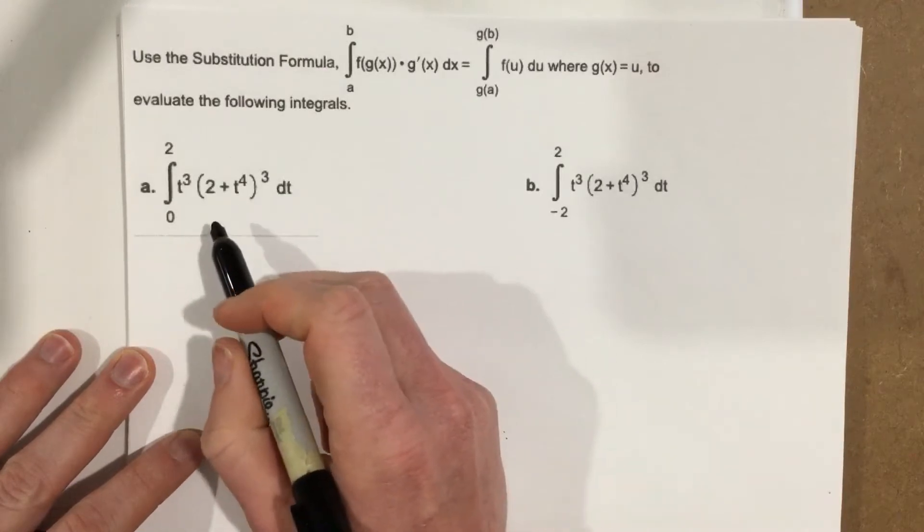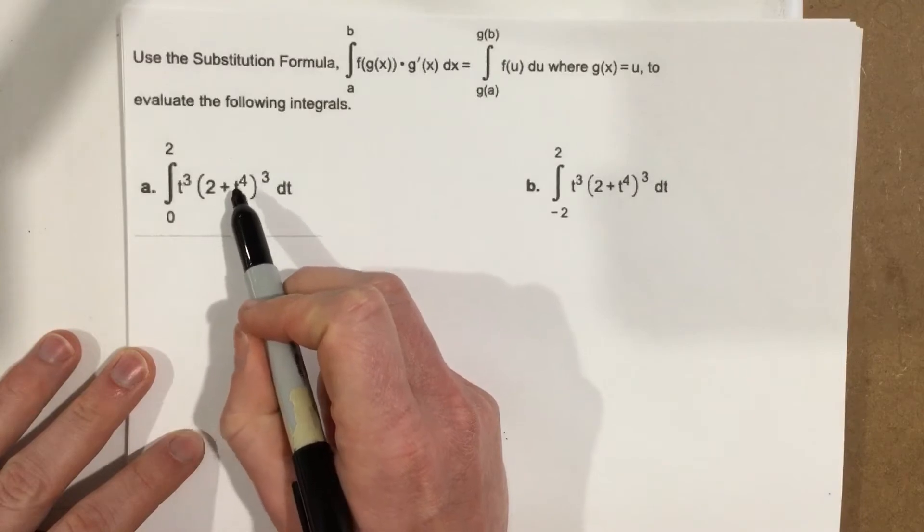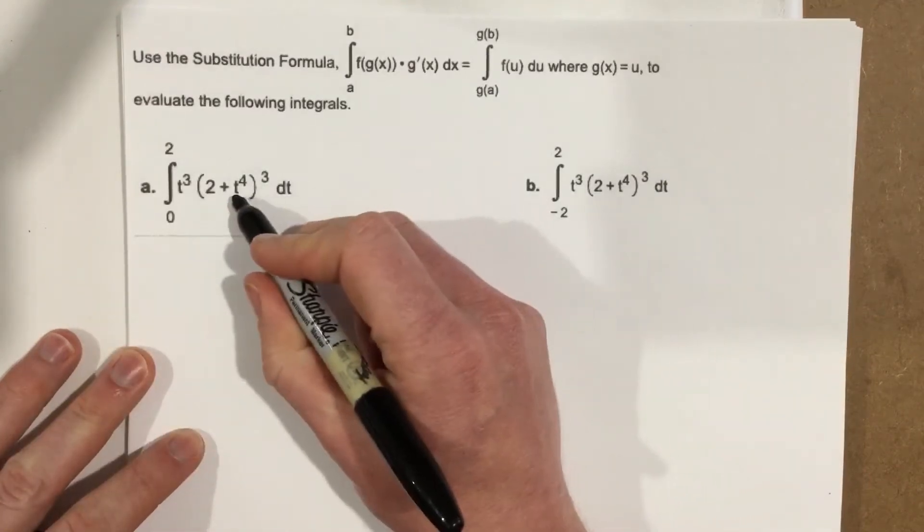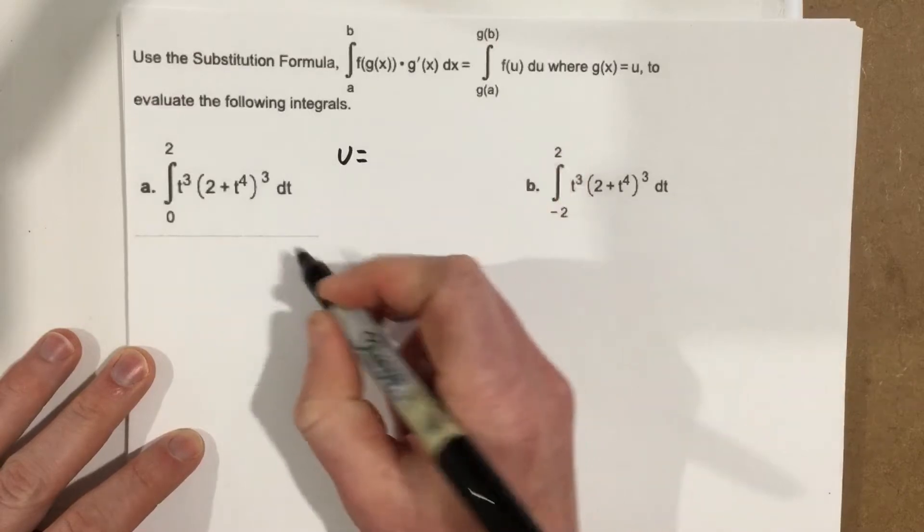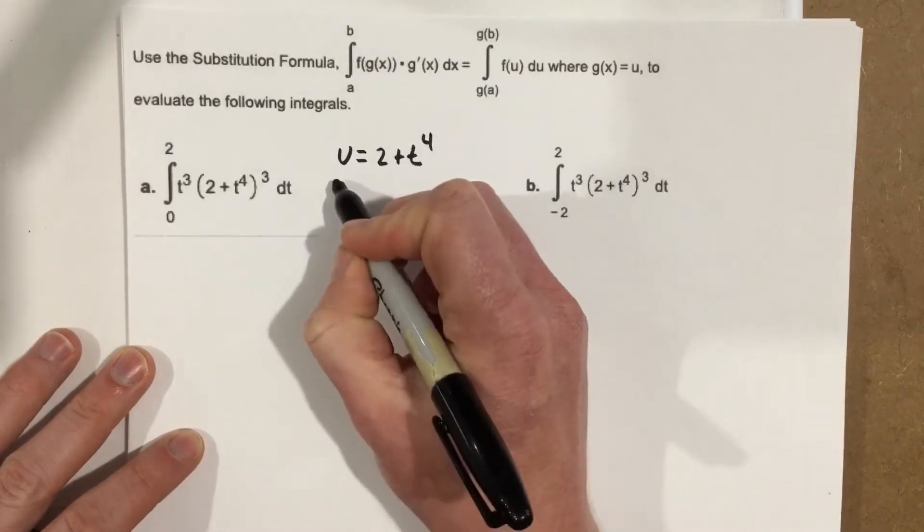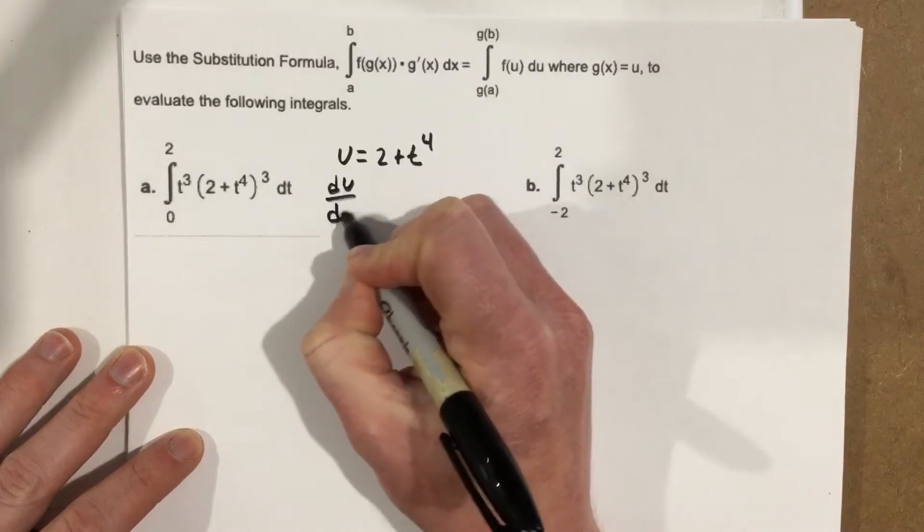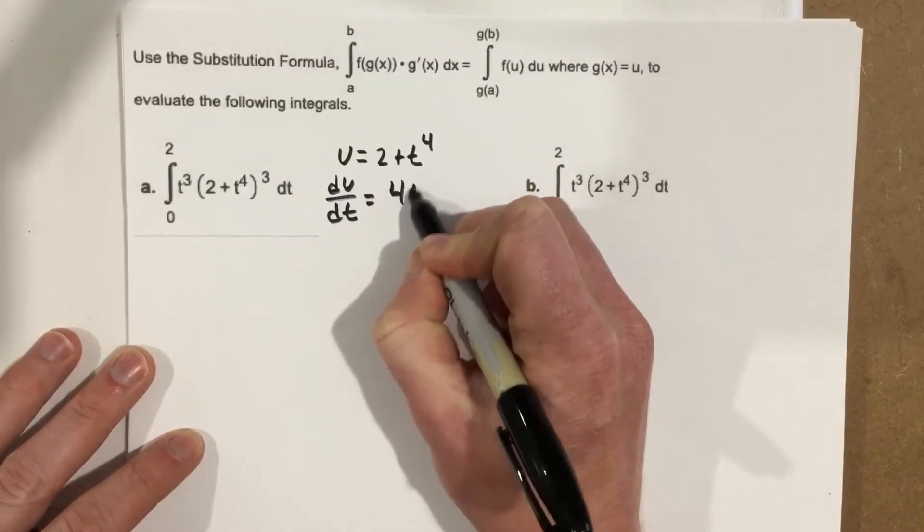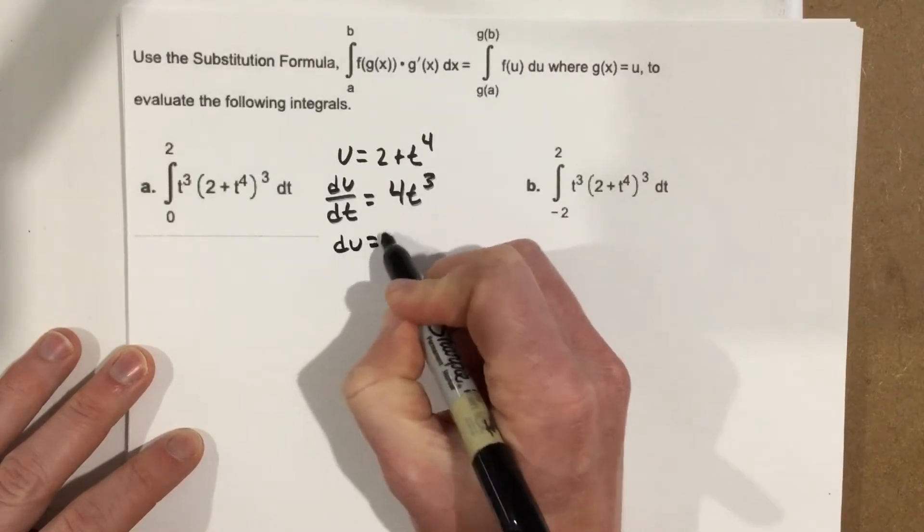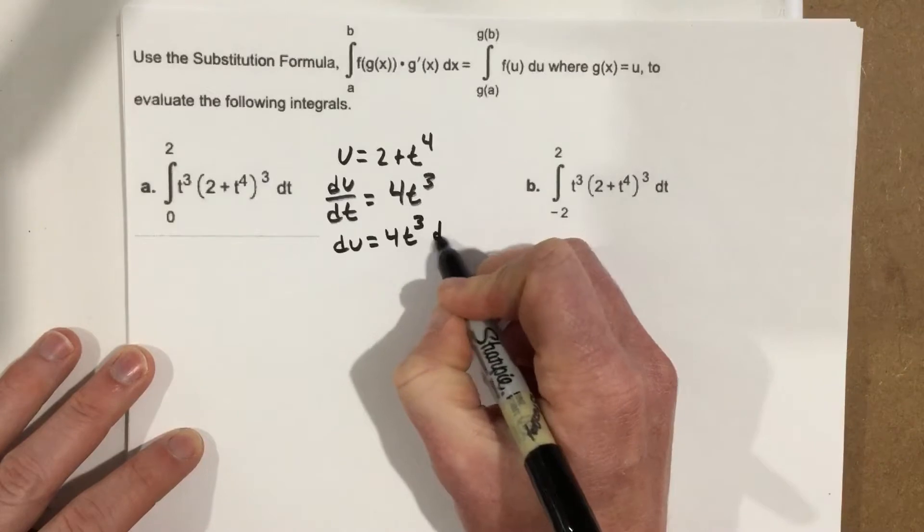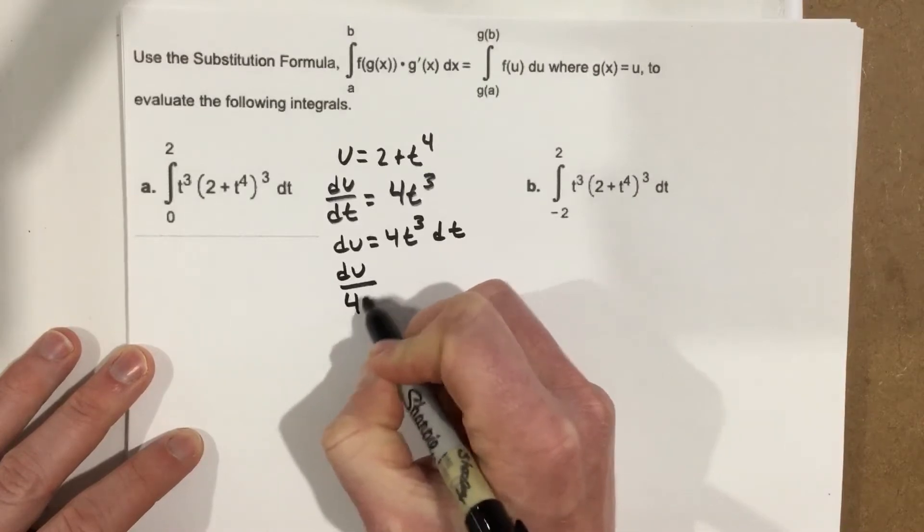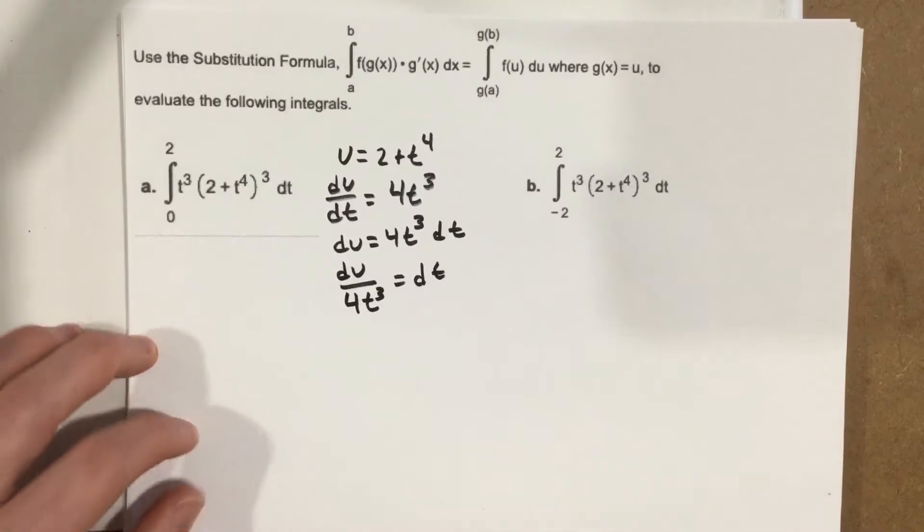Now, what do I want to make my u substitution be? Keep in mind the reason I have to do this u substitution is because I have a function inside of a function here, which requires us to do that. So I'm going to make u, in this case, be equal to 2 plus t to the 4th. And that means that du over dt equals, take this derivative, you get 4t cubed. So if I multiply by dt, then I get du equals 4t cubed dt, and then divide by 4t cubed, and I get du over 4t cubed equals dt. Okay, now we're ready to rock.